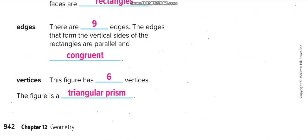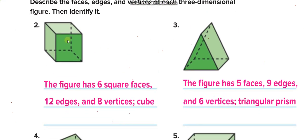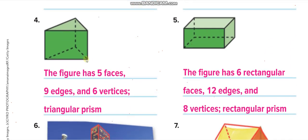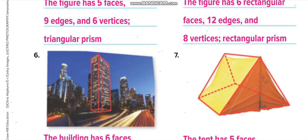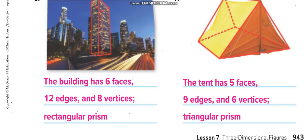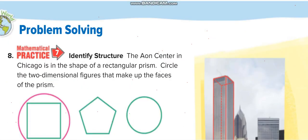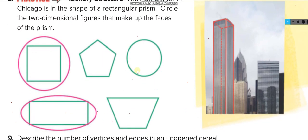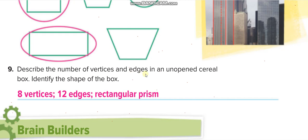Again here: it's a cube — six square faces, twelve edges, eight vertices. Triangular prism: five faces, nine edges, six vertices. For this figure, the top and bottom bases are square, so we circle square, and the sides are rectangle, so rectangular. Down here: describe the number of vertices and edges in an unopened cereal box. Of course, if it is a box, it has eight vertices, twelve edges, and it's a rectangular prism.